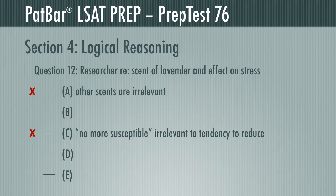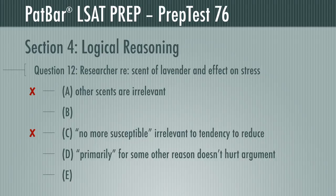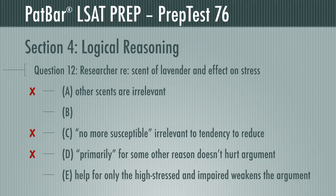D is cause and effect, but it is not a requirement. Assume the opposite: that using lavender scent reduces susceptibility to illness, but primarily for some reason other than reducing stress. Does it destroy the argument that the use of the scent likely leads to reduced incidence of illness? It does not, and D is not correct. E is simply wrong — it assumes lavender would help only those people under enough stress to impair their immune systems, which weakens the argument. If no one who uses lavender scent would otherwise be stressed enough to impair their immune systems, this would cause the argument to fail. B is the correct response.